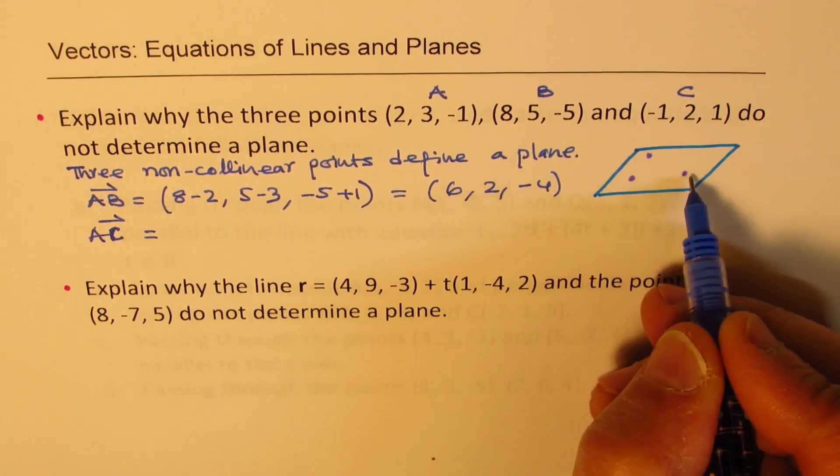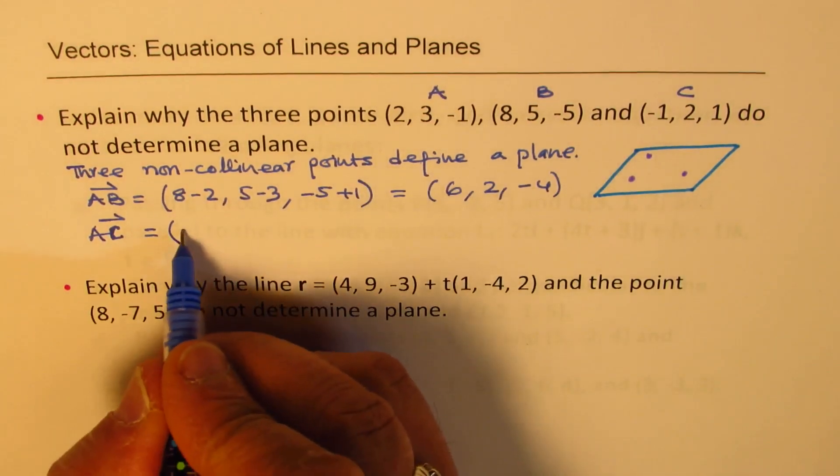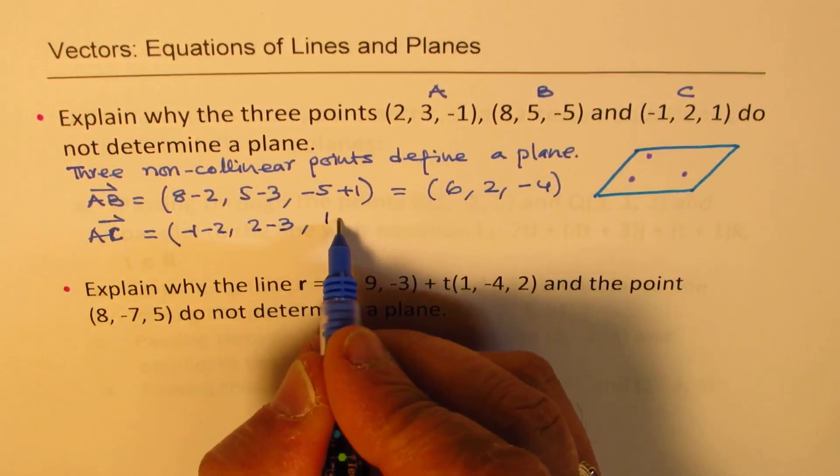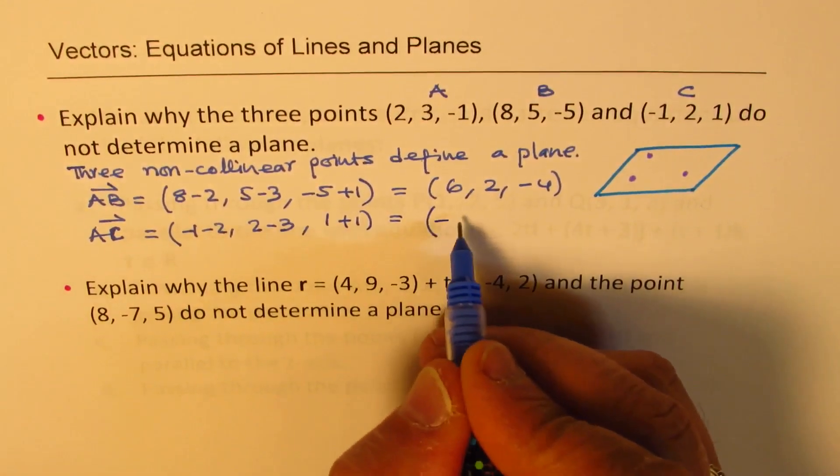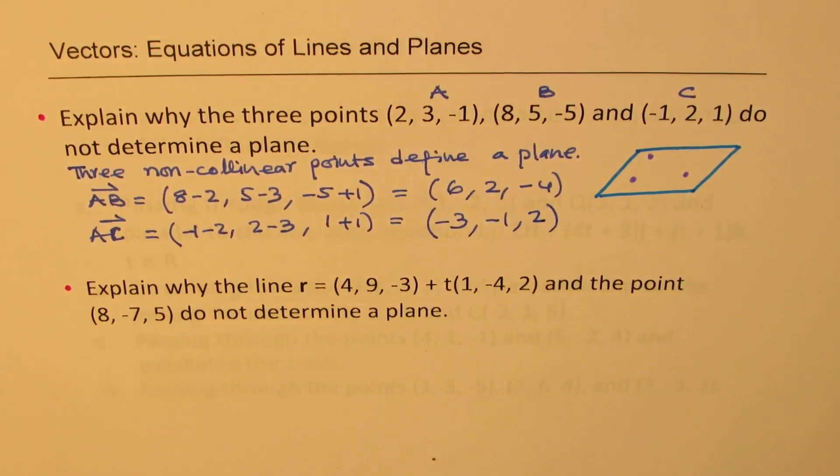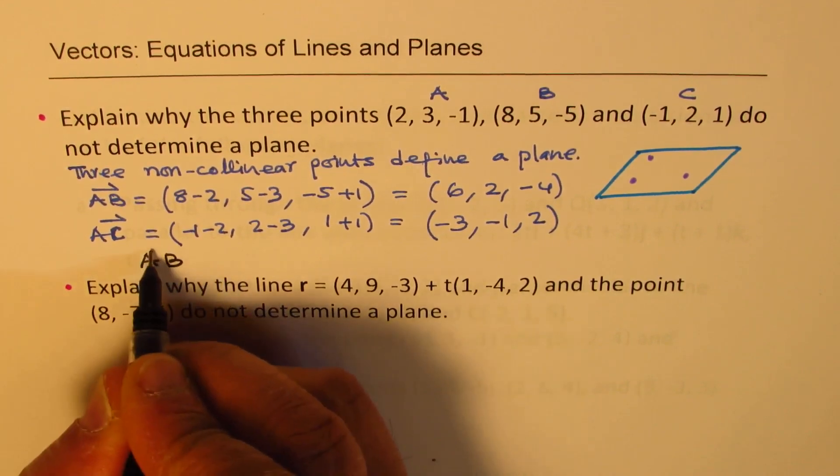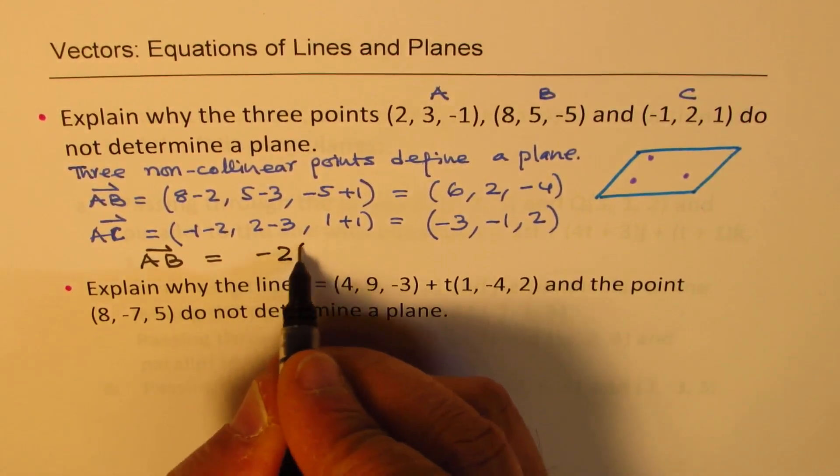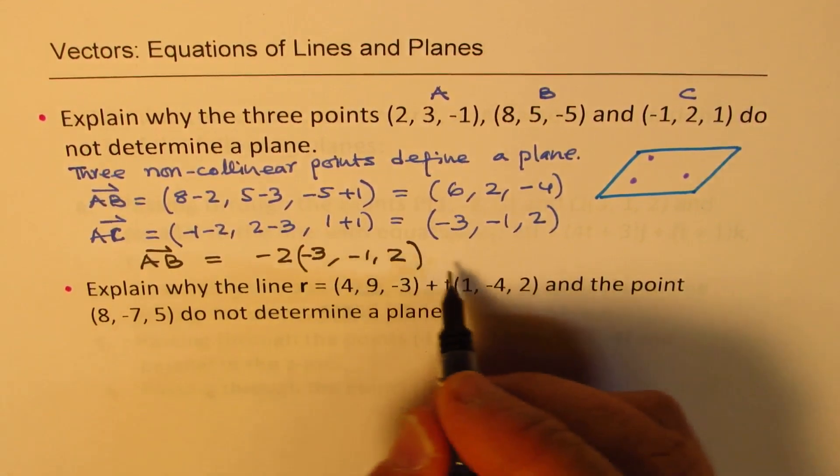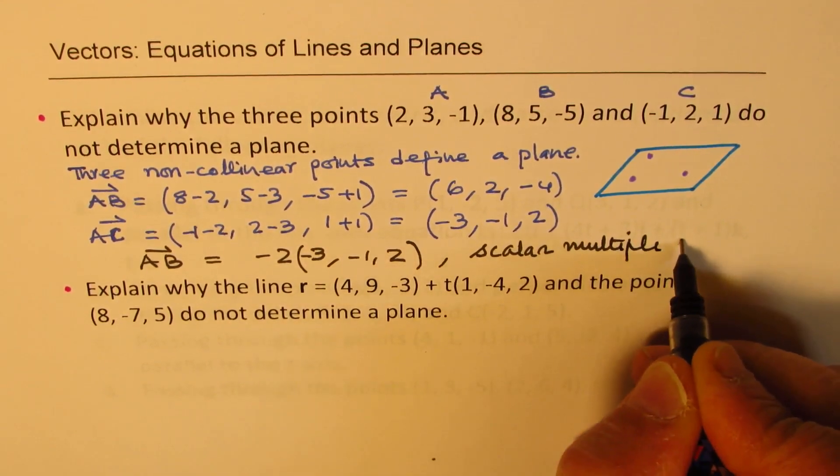Now let's find the direction from, we could actually say b to c, or we could also say from a to c. So I prefer to keep one point common. Let's do from a to c. So at least we know this point is common. We first check that point, and now we are checking the third point. Is it in the same line? That's the whole idea. So that gives us -1 - 2, 2 - 3, 1 minus -1 makes it plus. So -1 - 2 is -3, 2 - 3 is -1, and 1 + 1 is 2.